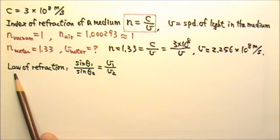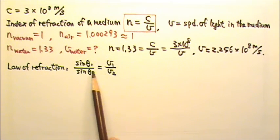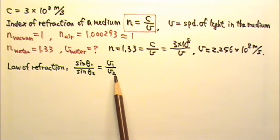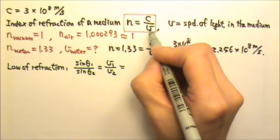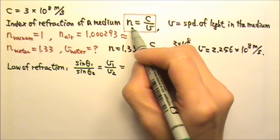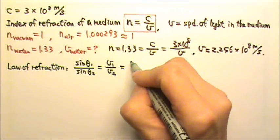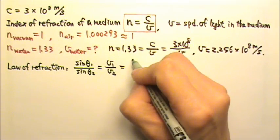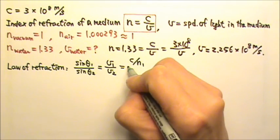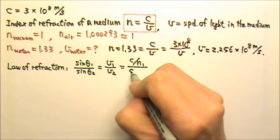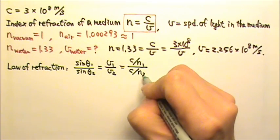When light refracts, it follows the law of refraction: sin theta 1 over sin theta 2 equals to V1 over V2. Because V equals to C over N, so we can replace V1 with C over N1 and V2 with C over N2.